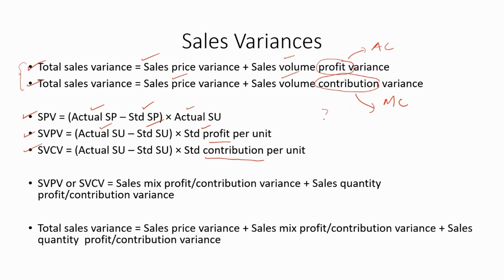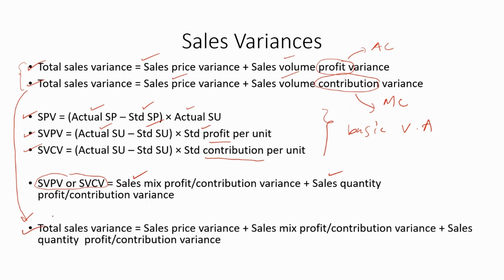All of these calculations are basic variance analysis. Now let's go one step further. Under advanced variance analysis, we can divide the sales volume profit variance or sales volume contribution variance into two types: sales mix variance and sales quantity variance. So the total sales variance can now be calculated using sales price variance plus sales mix variance plus sales quantity variance.